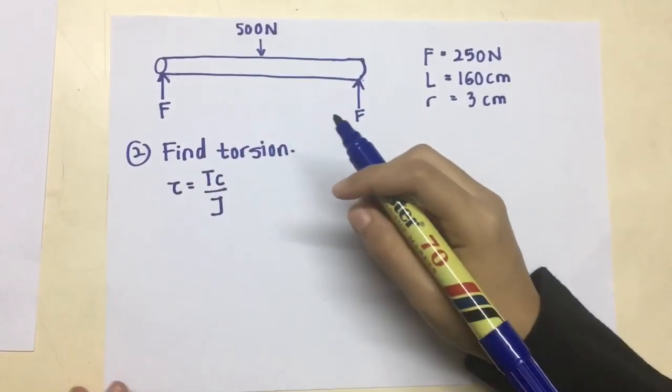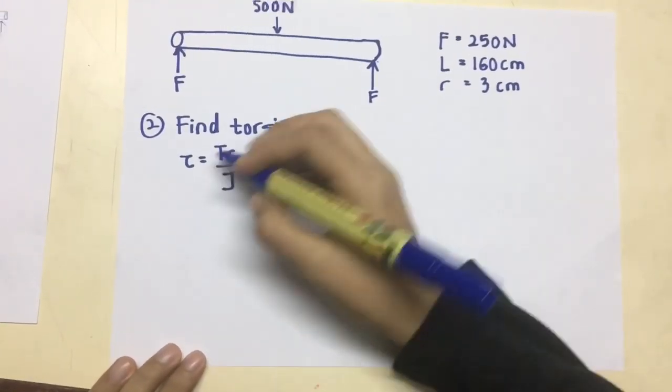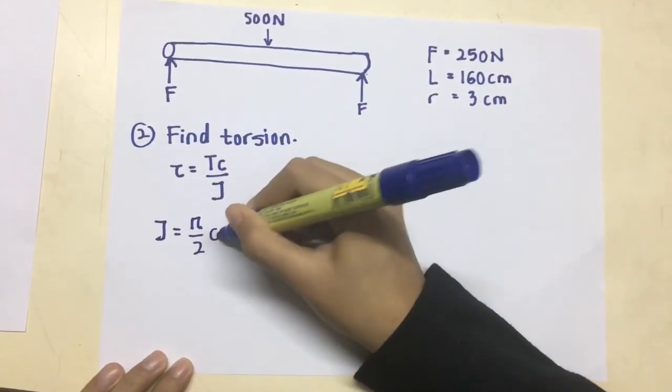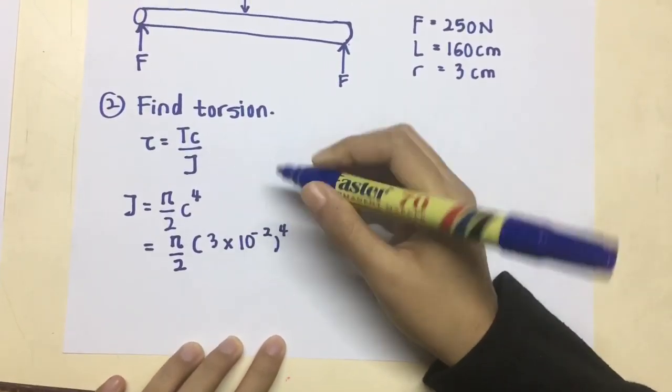As you can see the shear stress formula, which is Tc over J. Tau indicates the shear stress, T indicates the torsion, C indicates the radius, and J indicates the polar moment of inertia. As the rod shape cylinder, so the formula of J is pi over 2 C4.